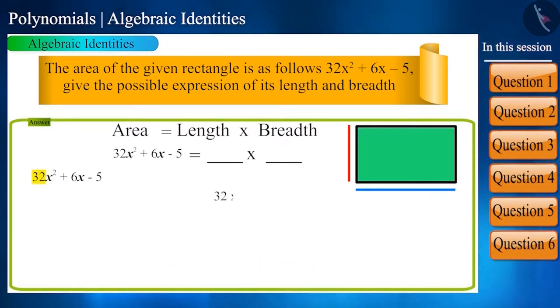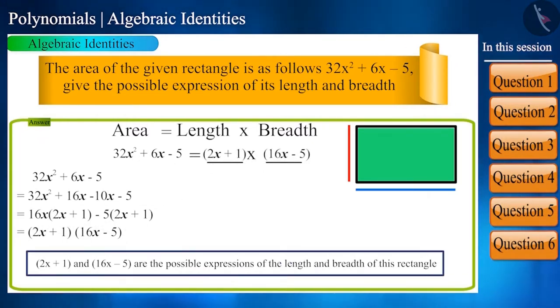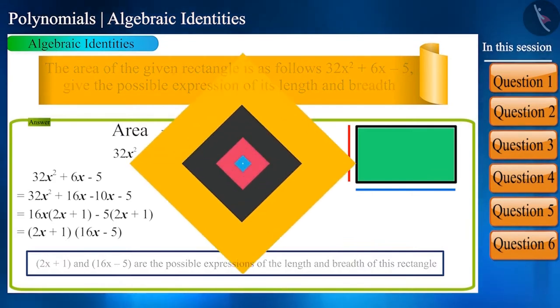So 32 multiplied by -5 will be -160. Now two numbers whose product is -160 and the sum is 6x are 16 and -10. Now let's write it like this: (2x + 1)(16x - 5) are the possible expressions of the length and breadth of this rectangle.